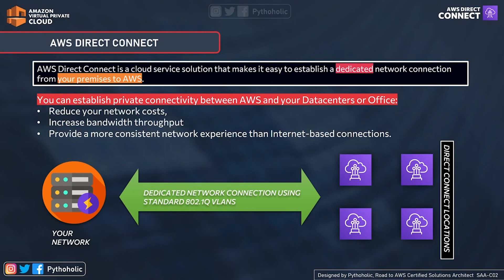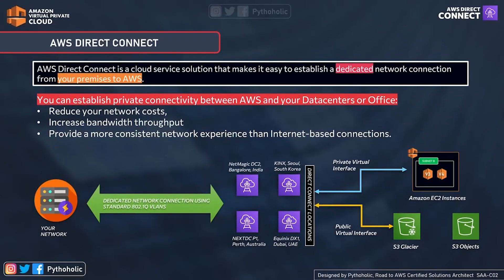Most importantly, Direct Connect provides a more consistent network experience than internet-based connections. It lets you connect to the AWS Direct Connect locations, and these dedicated connections can be partitioned into multiple virtual interfaces using industry-standard 802.1q VLANs. VLANs are more efficient compared to LANs as they are tightly coupled with their broadcasting domain. These multiple virtual interfaces allow you to use the same connection to access both public resources such as S3 or Glacier.